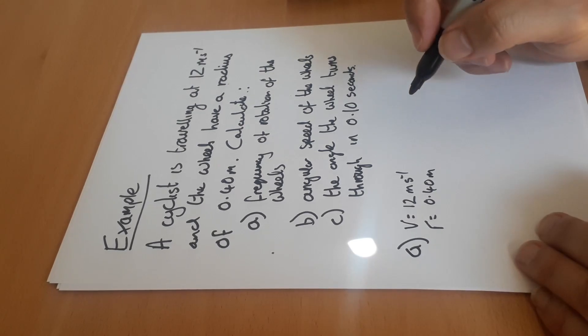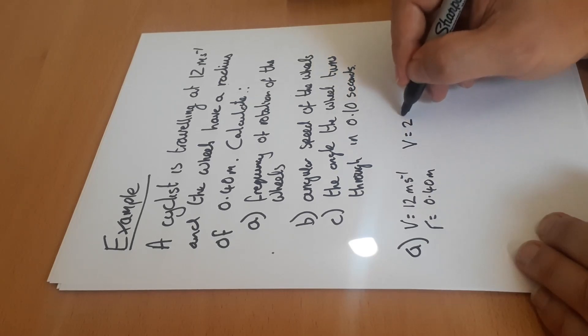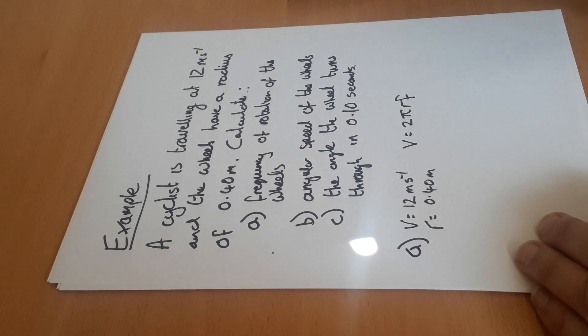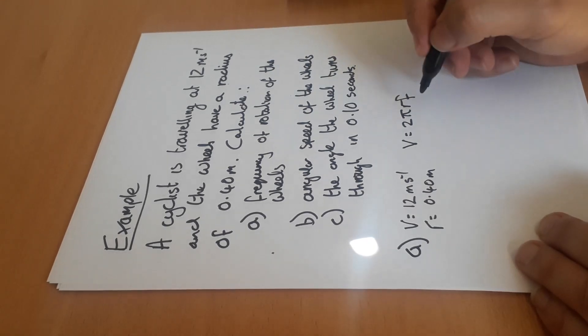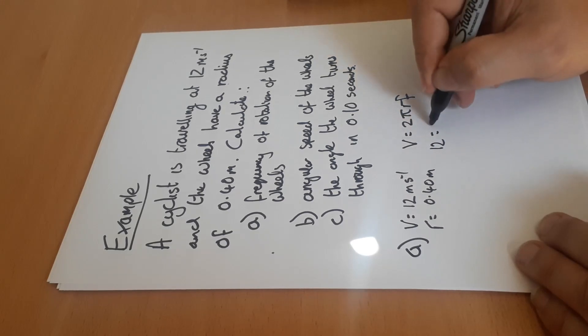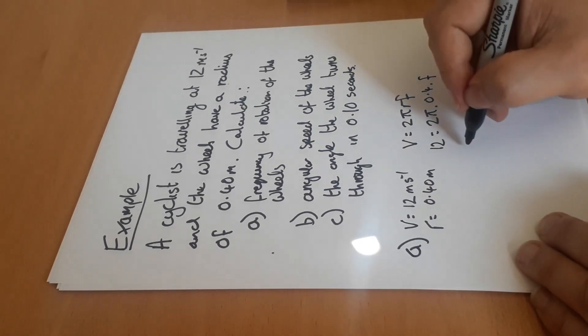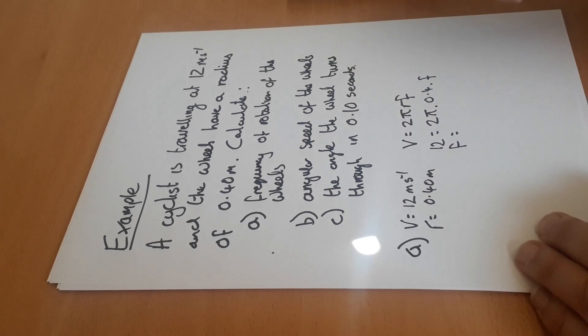So frequency - we can work out using the formula tangential velocity is equal to 2πrf. So we stick our numbers in: 12 equals 2π times the radius times the frequency.